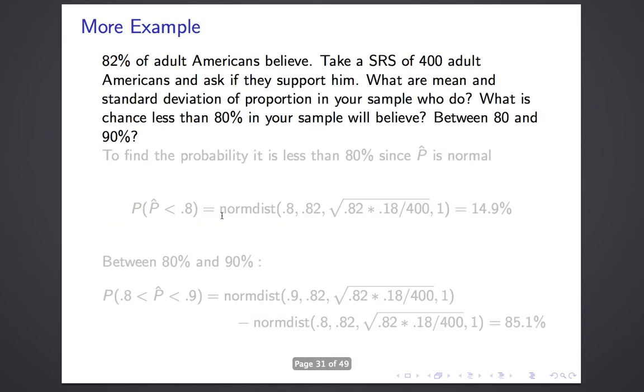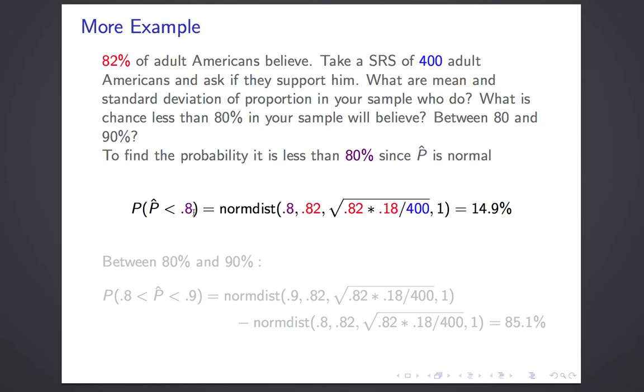And here's the payoff. If you know a variable is normal, you know its mean, and you know its standard deviation, you know everything about it. So when I ask, what's the chance that less than 80% in your sample believe in God? You use normdist. The probability that P-hat is less than 0.8, because P-hat is normal, is normdist. 0.8 goes first. The mean goes second. Here's our standard deviation, comma, our ritualistic one, close parentheses. And that works out to 14.9%.